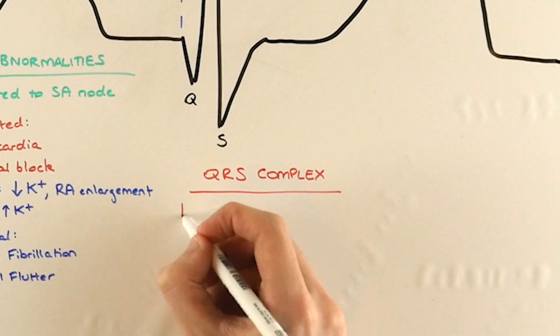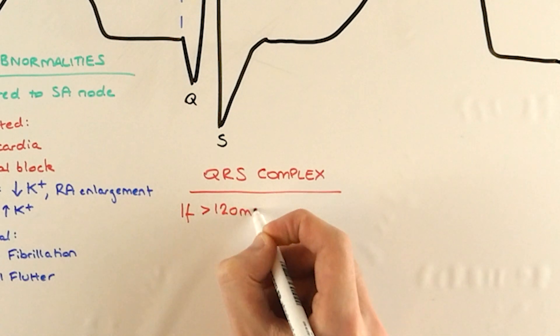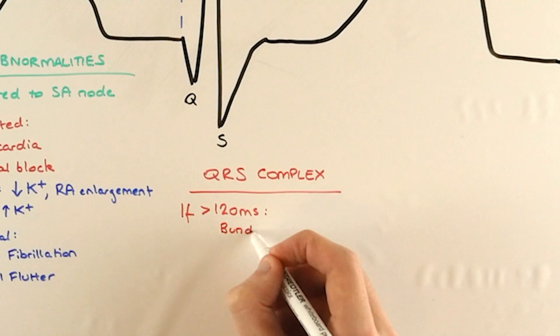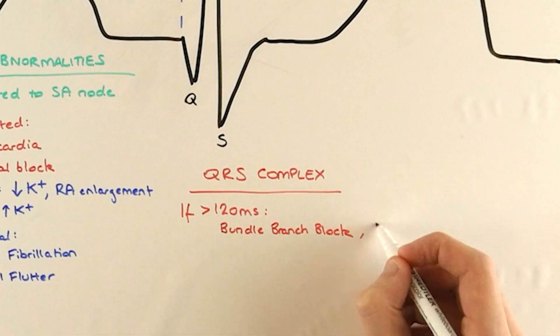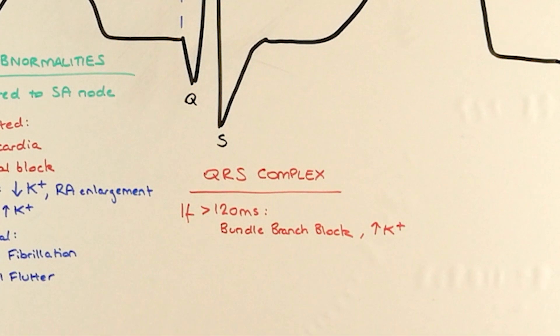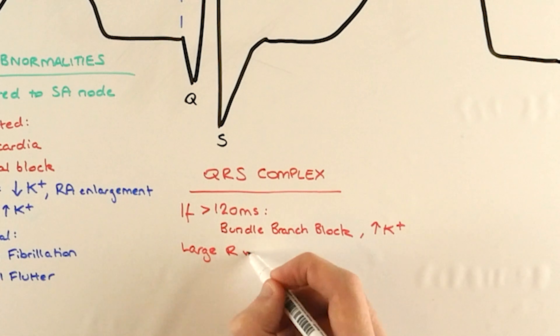And once again we're only really concerned with if it's long or short. If it's more than 120 milliseconds, crucially we need to be thinking about bundle branch block, a problem with the conduction system in the middle of the heart, or indeed hyperkalemia, again too much potassium.